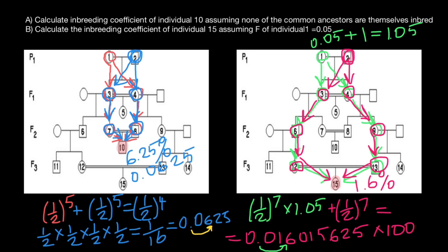If you wonder what the inbreeding of individual 15 would be if individual one were not inbred, the inbreeding coefficient would be 1.56%, which is very close to our answer of 1.6%. So as you can see, the 5% inbreeding of individual one does affect the inbreeding of individual 15, but this effect is insignificant.